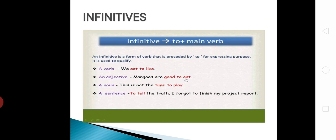Now, come to infinitive. Infinitive is a form of verb that is preceded by 'to' for expressing purpose. It is used to qualify. And the formula of infinitive is 'to' plus main verb.